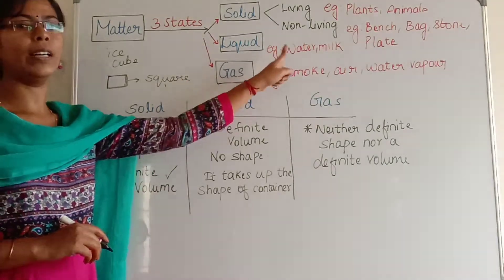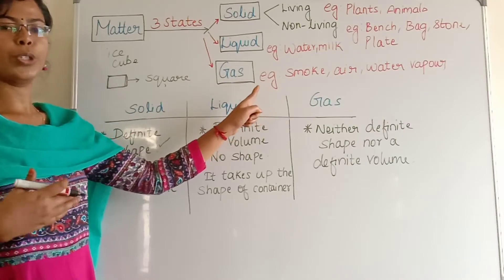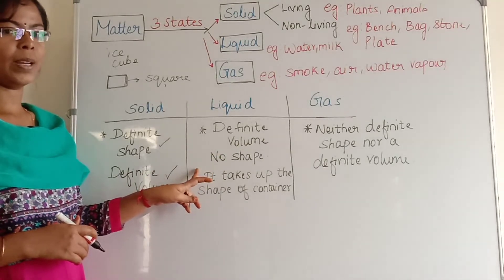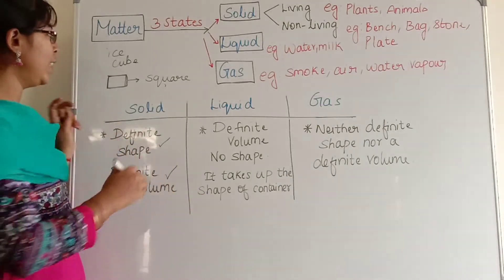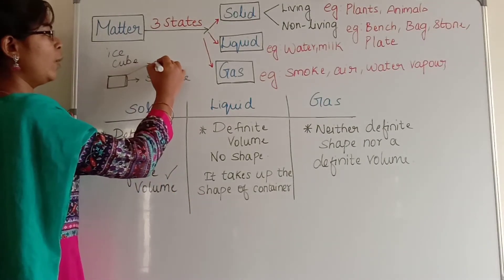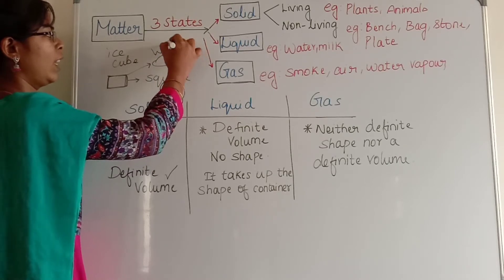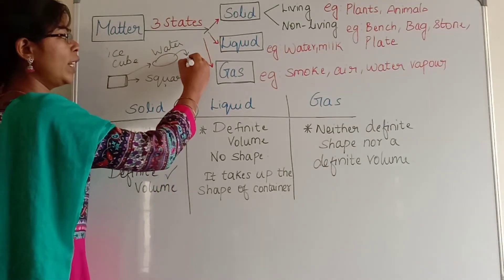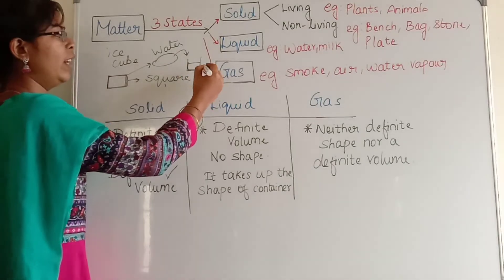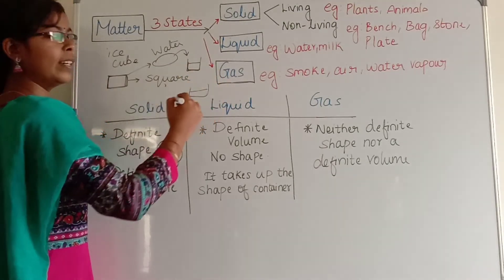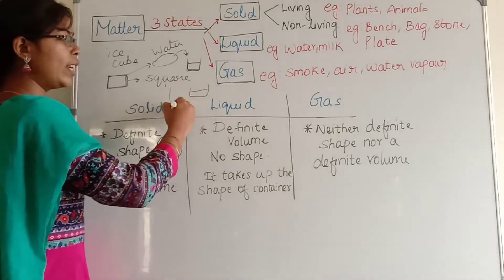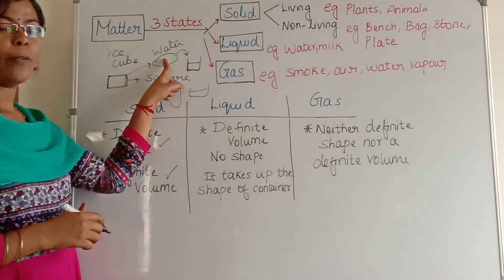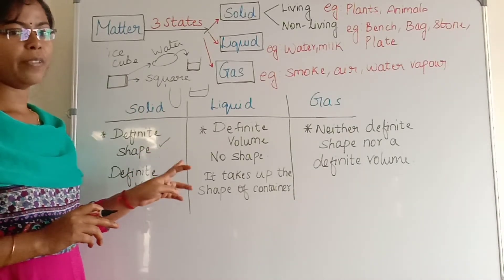Liquid, for example: water, milk, kerosene, juice, sugar solution, salt solution, etc. This liquid has a definite volume but it has no definite shape. It has no shape. When we pour it in a tumbler, it takes up the shape of a tumbler. When we pour it in a container, it takes up the shape of a container. When we pour it in a jar, it takes up the shape of a jar. So liquid has no shape — it has only a definite volume.